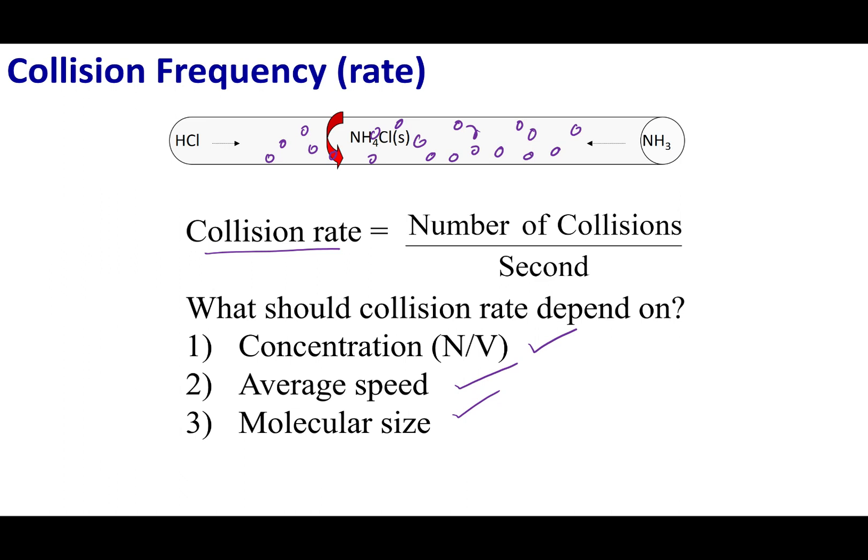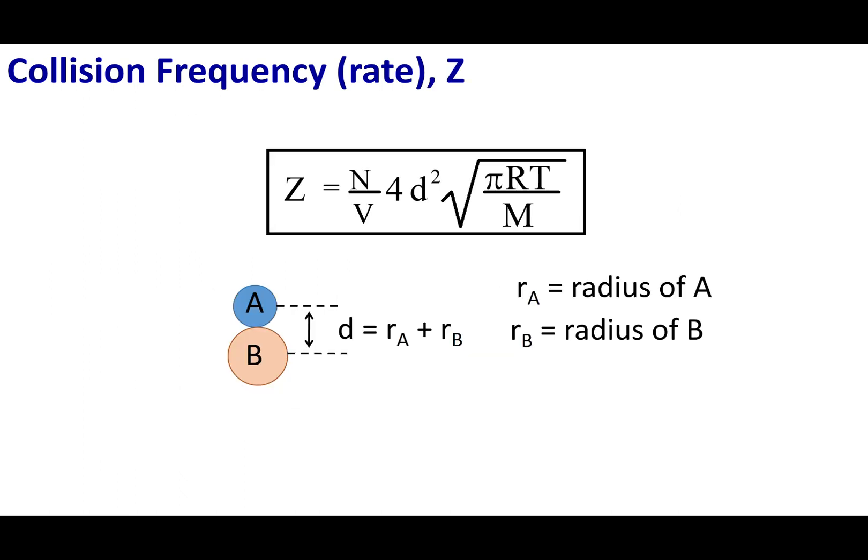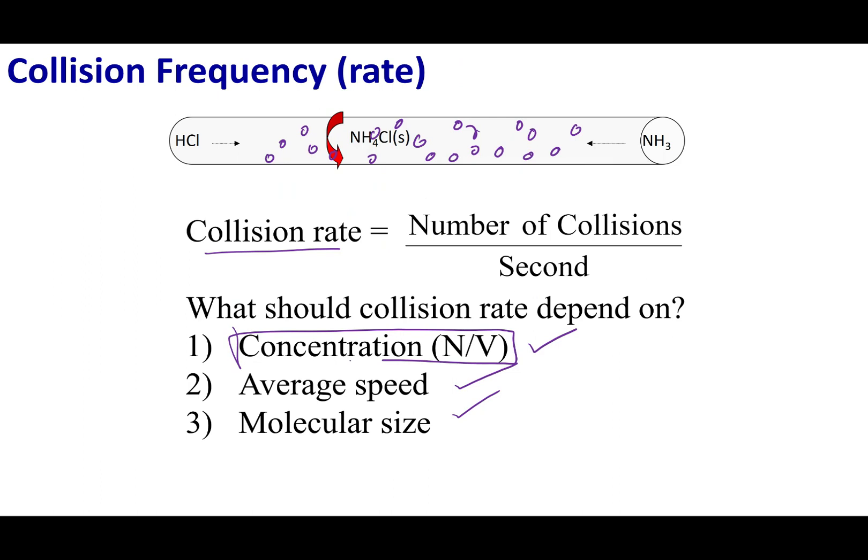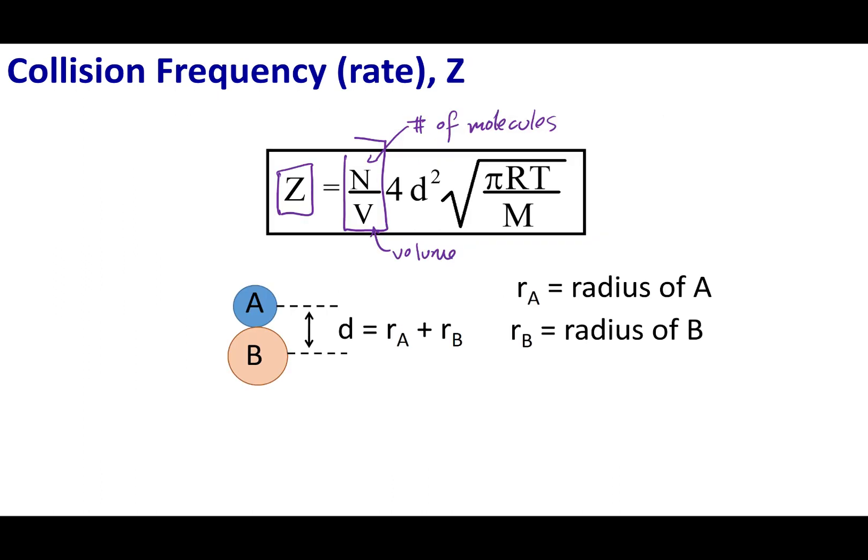I can put all these factors into one grand equation. This is the equation for collision frequency. Z is my collision frequency. N over V, that's going to be the number of molecules over the volume. Number of molecules over a volume, that's the same as a concentration. So that concentration term is going to be times 4 times d squared.